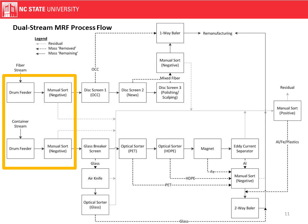This is a dual stream MRF. Looking at the box on the left, there are two drum feeders — one additional drum feeder compared to the single stream MRF. The materials going in the top are fiber, and the materials going in the bottom are containers. Each equipment stream can be a little smaller because the residual from the fiber stream is not present in the container stream, and the fiber stream's disc screens do not have to accommodate the extra mass of the container stream.